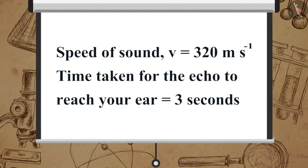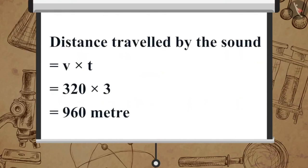Here, speed of sound V is equal to 320 meters per second. Time taken for the echo to reach your ear is equal to 3 seconds. We know distance travelled by the sound is equal to V multiplied by T, which is equal to 320 multiplied by 3, which is equal to 960 meters.